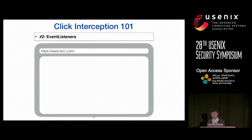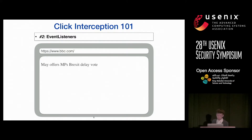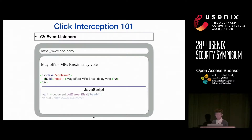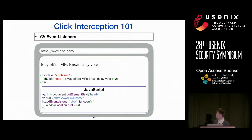The second main technique for manipulating user clicks is through event listeners — functions executed in JavaScript when predefined events occur. You don't necessarily need a hyperlink to cause navigation; you can use a click event handler instead. For example, you attach an event listener for the click event on an element, and when the user clicks it, the callback function executes and changes the user's navigation URL.